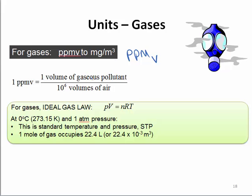The volume that a gas takes up is related to the ideal gas law and the partial pressure of that gas. To remind you, the ideal gas law states that PV equals nRT. At zero degrees Celsius and one atmosphere pressure, which is defined as STP or standard temperature and pressure, one mole of gas occupies 22.4 liters of air.